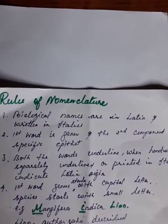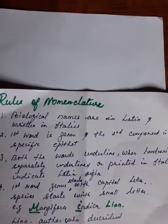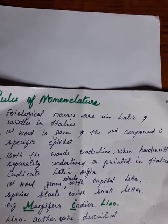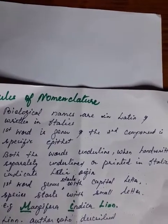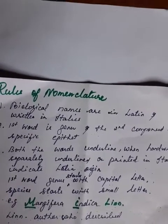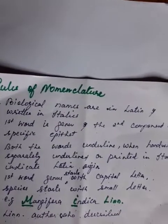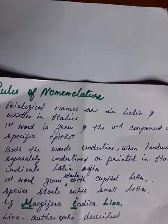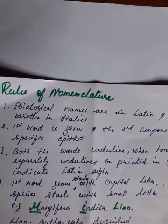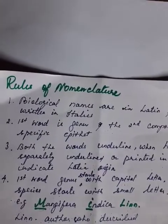The common rules of nomenclature: biological names are of Latin origin and written in italics. The first word is genus and the second is specific epithet. When handwritten, both words are underlined separately; when printed, they are in italics — the slant indicates Latin origin. Genus starts with a capital letter, species starts with a small letter. For example, Mangifera indica — M is capital, i is small. The abbreviation Lin (Linnaeus) is attached to indicate who first described the name.